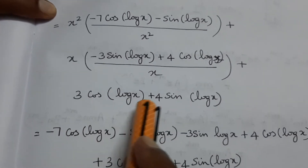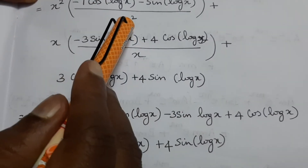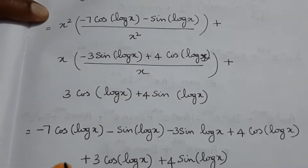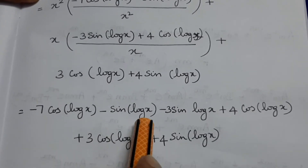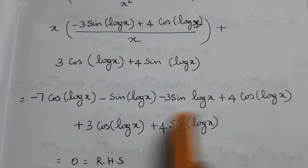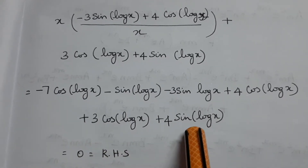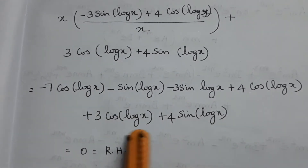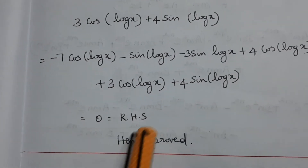Substituting all values, x² cancels with the denominator of y₂, x cancels with the denominator of y₁, and all terms cancel: minus 7 cos(log x) minus sin(log x) plus 4 cos(log x) plus 3 cos(log x) plus 4 sin(log x) equals 0, which equals RHS. Hence proved.